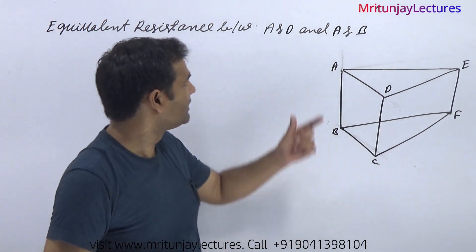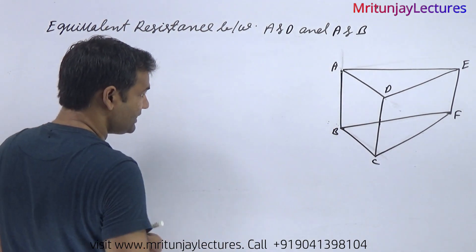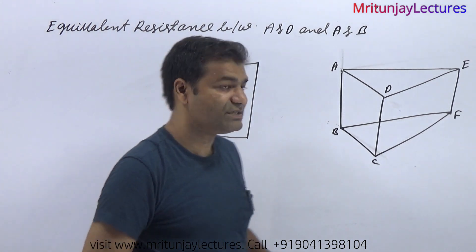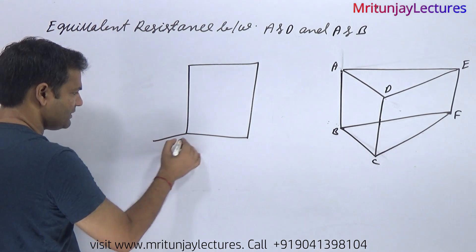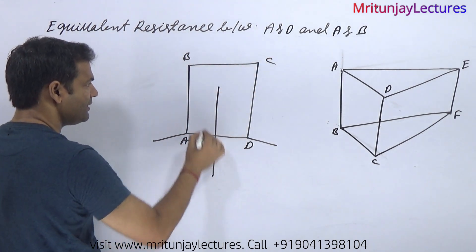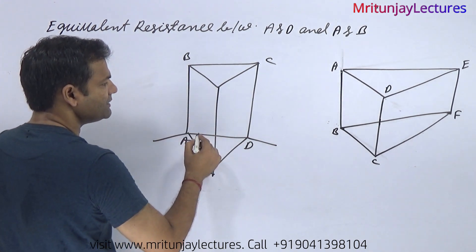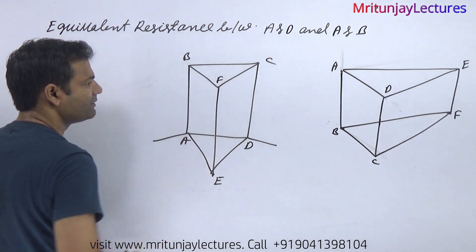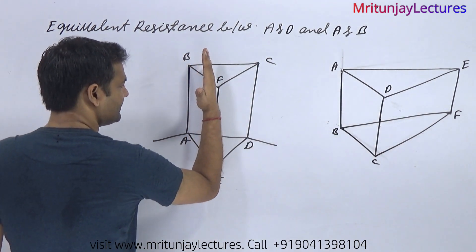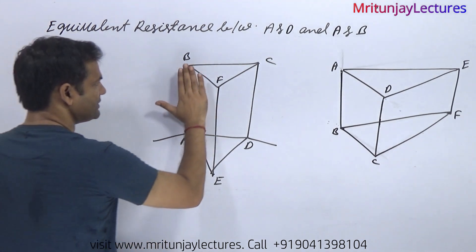Now we determine equivalent resistance between AD and AB. It looks like a prism. You can do it using star-delta symmetry, otherwise it doesn't look like an easy series or parallel combination. We focus on that: A, D, B, and C. Draw a line here — that is E and that is F. This is the equivalent representation.